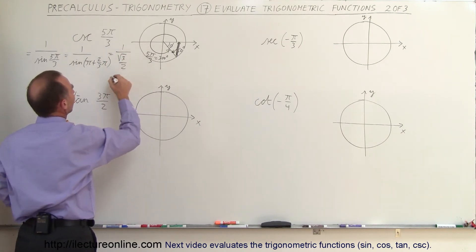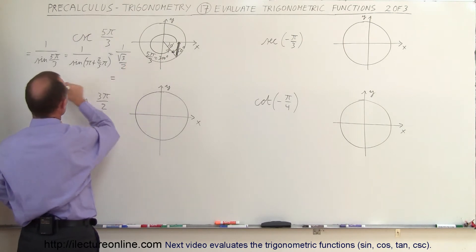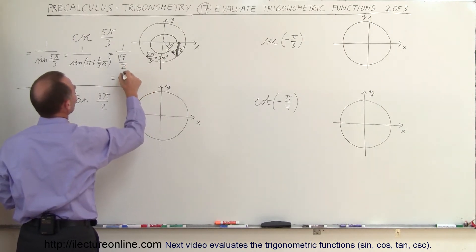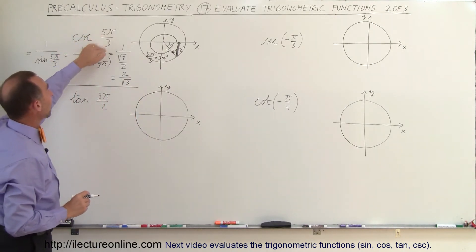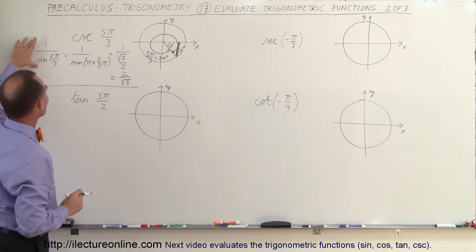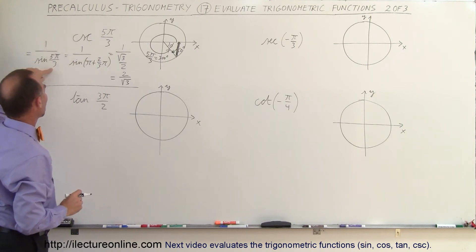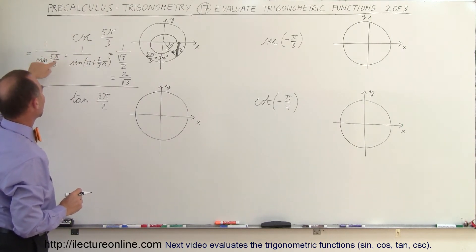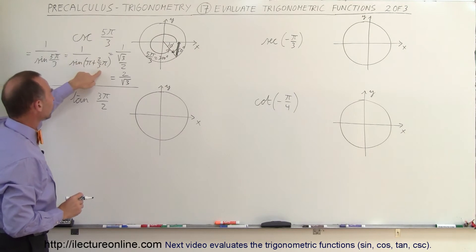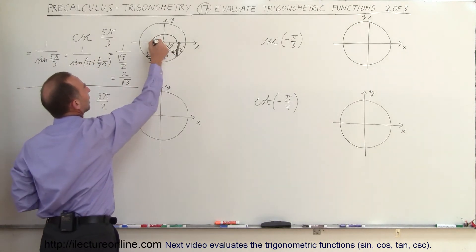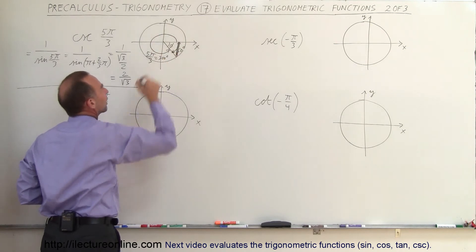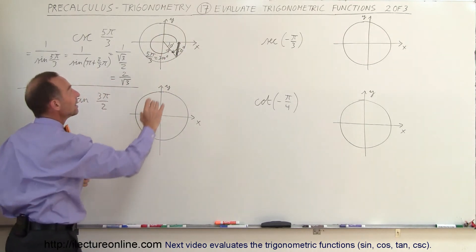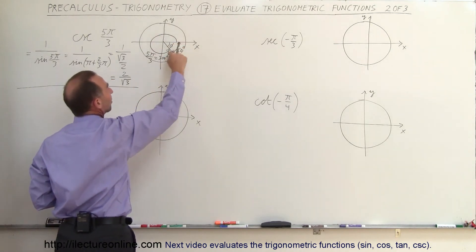Taking the inverse of that, that is equal to 2 divided by the square root of 3. That's how we evaluate the cosecant of 5π over 3 — we first write it as 1 over the sine of 5π over 3, realizing that 5π over 3 is the same as π plus 2/3 π. π is 180 degrees, 2/3 π is 120 degrees, for a total of 300 degrees. We then find the reference angle of 60 degrees.